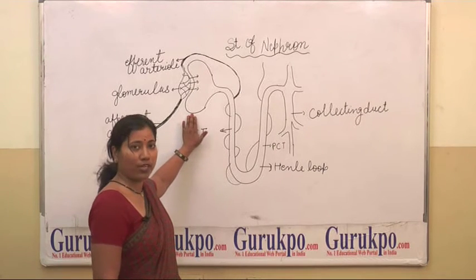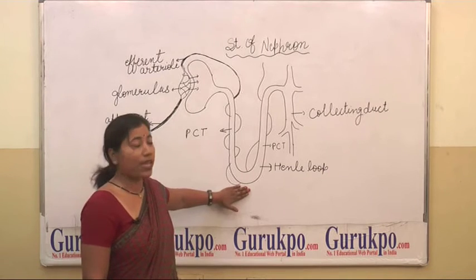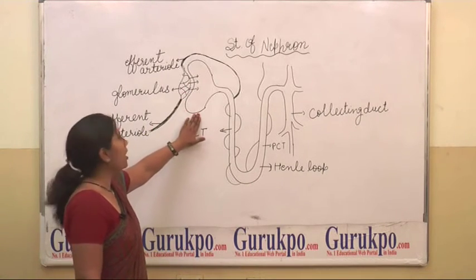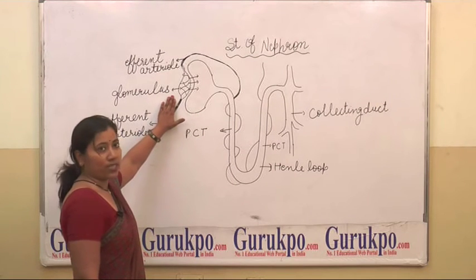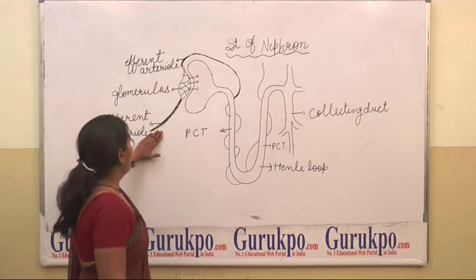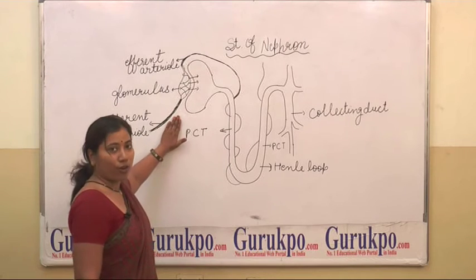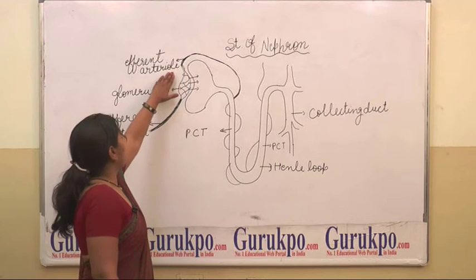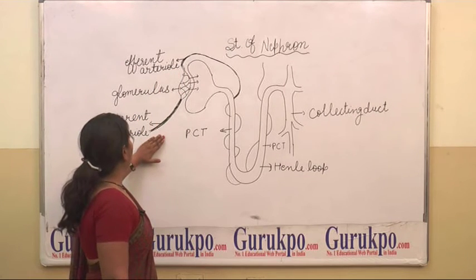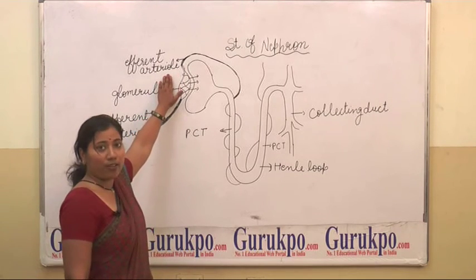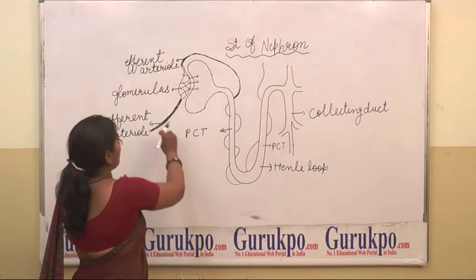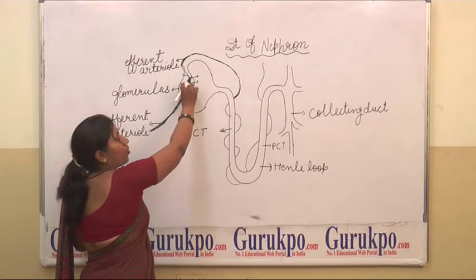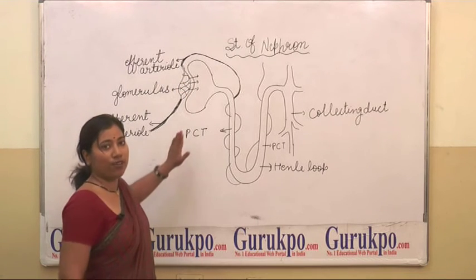First is Malpighian body and second is renal tubules. Malpighian body is made up of a cup-shaped Bowman's capsule and a glomerulus. This glomerulus develops from afferent arterioles and gives rise to efferent arterioles. The diameter of efferent arterioles is lesser than afferent arterioles, so blood comes under pressure from afferent arterioles and filtrates into the glomerulus. This process is known as ultrafiltration.